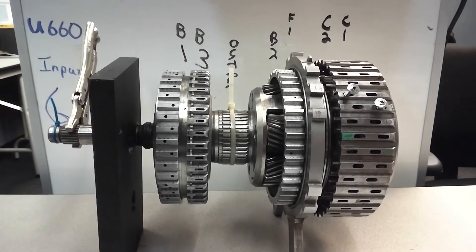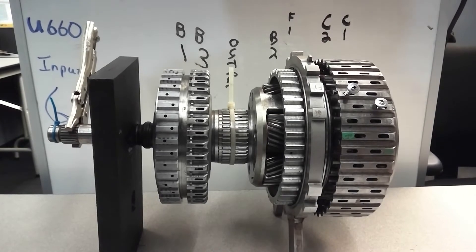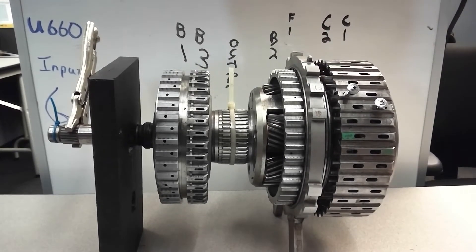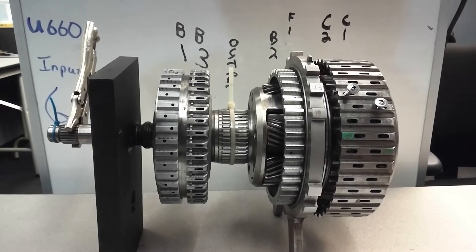I'm going to reset it to this. 2nd gear is 1.9 to 1, so we're looking for almost 2 revolutions. B1 comes on in 2nd gear.